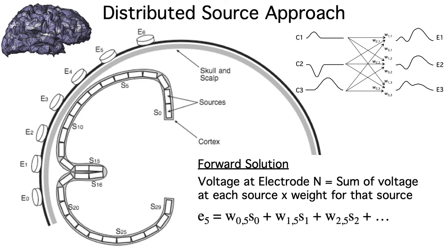For example, the voltage at electrode 5 is computed by multiplying the activation at source 0 by the weight between that source and electrode 5, plus the activation at source 1 multiplied by the weight between that source and electrode 5, etc.